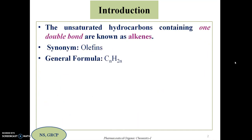Let us first revisit what alkenes are. Alkenes are the unsaturated hydrocarbons which contain one double bond. They are also known as olefins, as we discussed earlier — they have the capacity to form oil-forming liquids, which is how the word olefins came about.